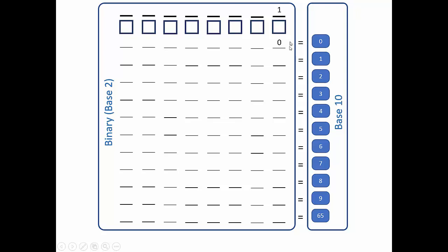If we have to represent 0 in base 2 and compare it to base 10 — pretty simple. I'm going to turn this box off, and if that box is off it's going to be 0. So 0 in binary is equal to 0 in base 10. If I want to represent 1, I turn that first box on, and that's going to be worth 1. So 1 equals 1.